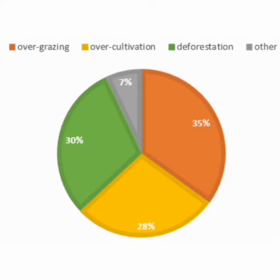I can see that four different causes have been mentioned here. First of all overgrazing, secondly over cultivation, then deforestation, and other causes. The four colors mentioned are green, yellow, orange, and silver. The highest cause affecting the land is overgrazing at 35 percent. Second goes to deforestation, third goes to over cultivation, and finally seven percent goes to the other reasons.